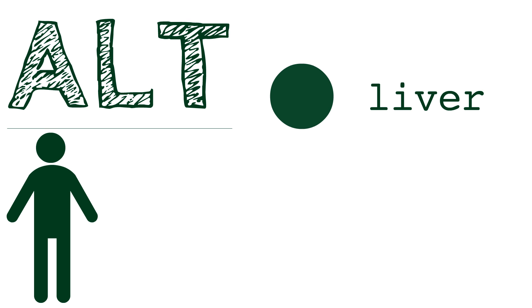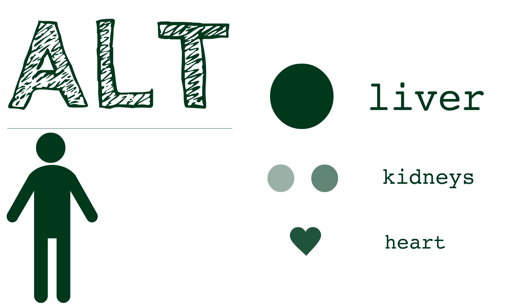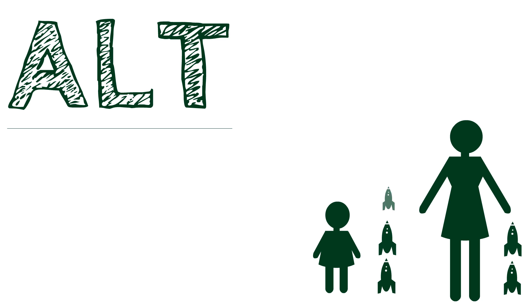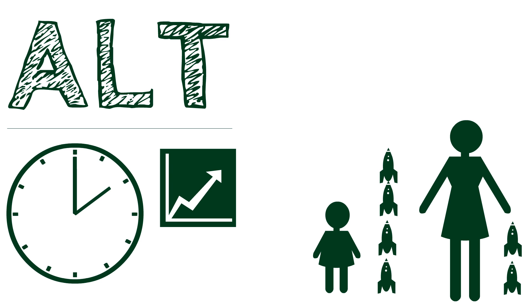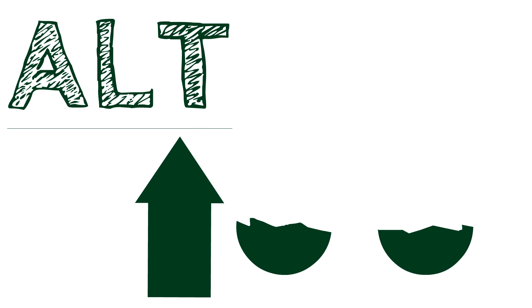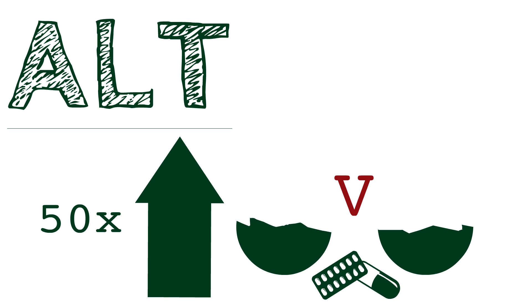ALT is found mostly in the liver, but also in small amounts in the kidneys and heart. Levels in children are twice that of adults. Levels of ALT fluctuate normally throughout the day. Higher circulating levels are specific for liver damage. When levels are 50 times higher than normal, it is usually due to viral or drug hepatitis.